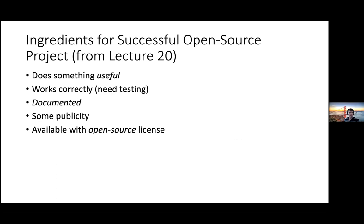This slide from lecture 20 helped me start this talk: what are the ingredients for a successful open source project? It needs to do something useful — kind of obvious that it needs to do something people want to use. It obviously needs to work correctly. If things are broken, people won't use them — they try it, it doesn't work, they quit. That happens all the time.